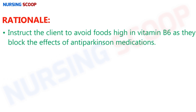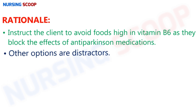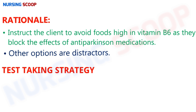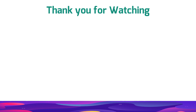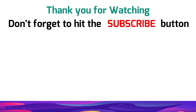Rationale: Instruct the client to avoid foods high in vitamin B6, as vitamin B6 blocks the effect of anti-Parkinson medications. Other options are just distractors. Test-taking strategy: reviewing the interaction of medications with other drugs and foods will help you select the correct option A. That's all for today's questions. If you enjoyed the content, please press the like and share button and leave your feedback in the comment section. See you in the next video — stay tuned, stay safe. Thank you.